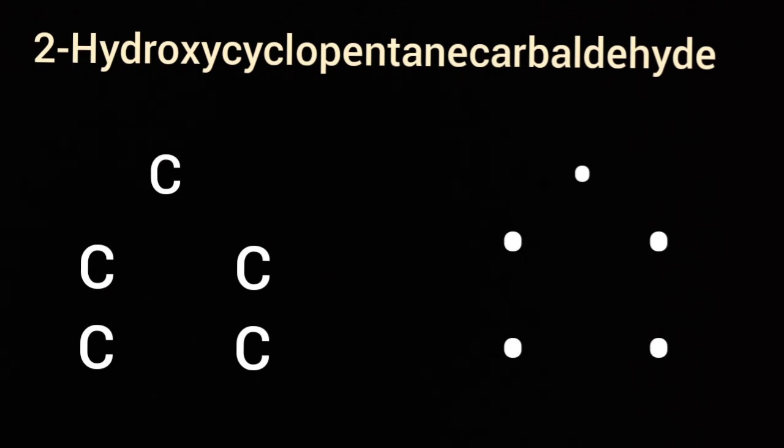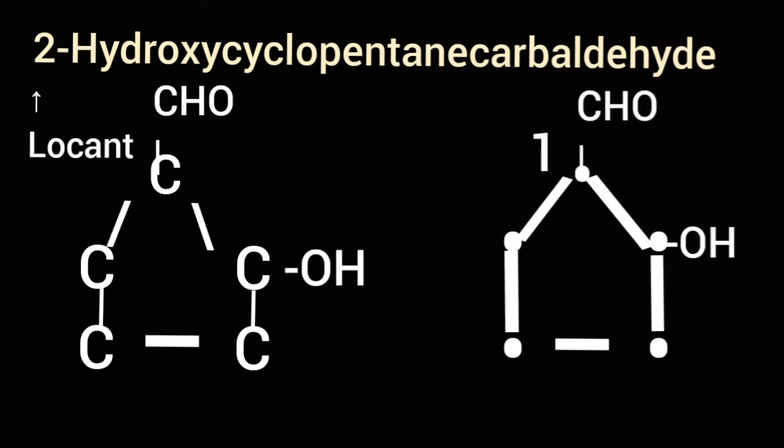Write the numbers of the carbon atoms from any corner: one, two, three, four, five. At number one position, CHO will be written. At number two position, OH will be written.